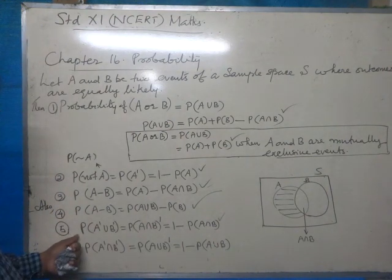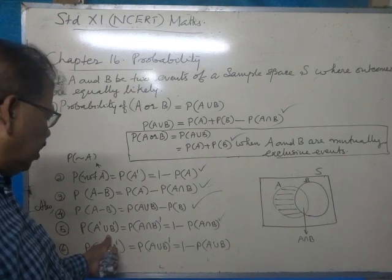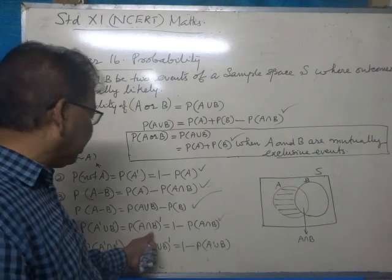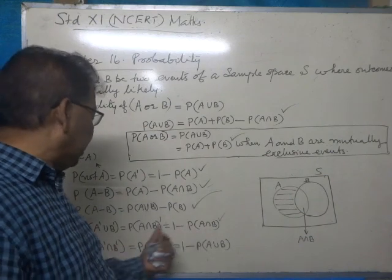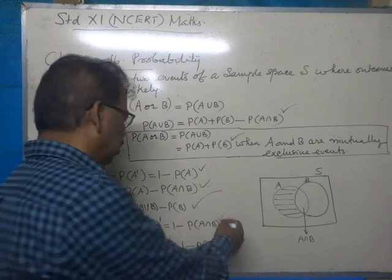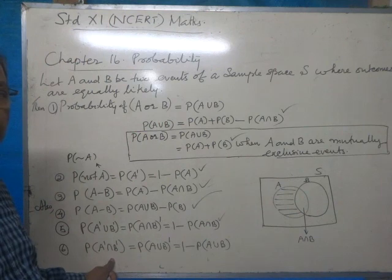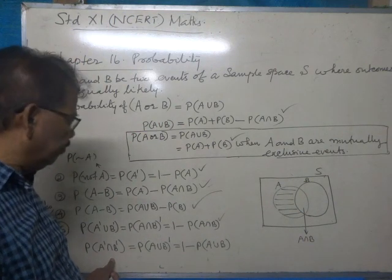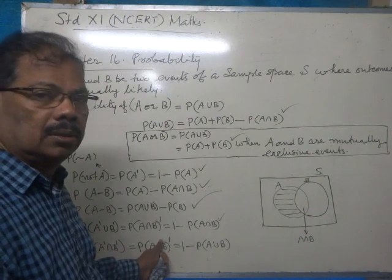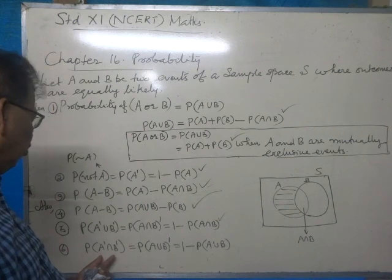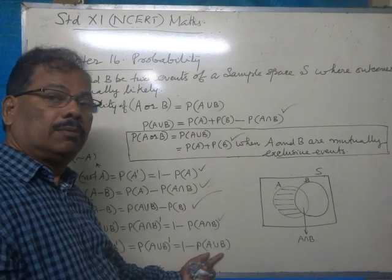Now, probability of A dash union B dash. By set theory, A dash union B dash is equal to A intersection B whole dash. Therefore, to find the answer, it is enough to subtract probability of A intersection B from 1. Similarly, probability of A dash intersection B dash: by set theory, A dash intersection B dash is the same as A union B whole dash. Therefore, for finding its value, it is enough to subtract probability of A union B from 1.